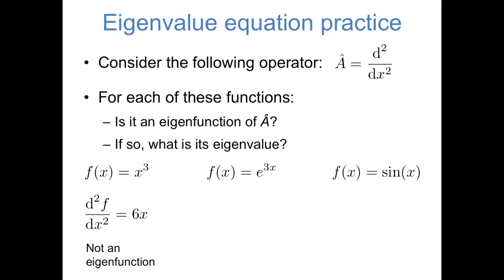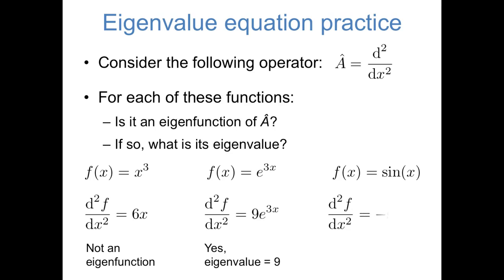Finally, let's look at f(x) = sin(x). If we take the second derivative of sin(x), we end up with negative sin(x), which is just negative 1 times our original function. So sin(x) is an eigenfunction of this operator, and the corresponding eigenvalue is negative 1.